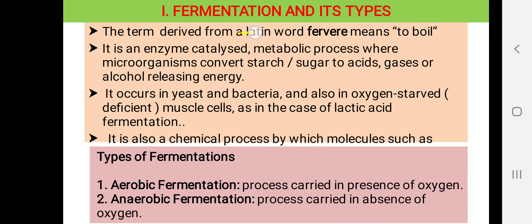Let us look into what is meant by fermentation and what are its types. The term fermentation is derived from a Latin word 'fervor' which means to boil. Fermentation is an enzyme-catalyzed metabolic process where microorganisms convert starch or sugar to acids, gases, or alcohol, and in the process it also releases energy. Fermentation occurs in yeast and also in bacteria, and it also occurs in oxygen-starved muscle cells, for example, lactic acid fermentation. Apart from being a biological process, fermentation is also a chemical process.